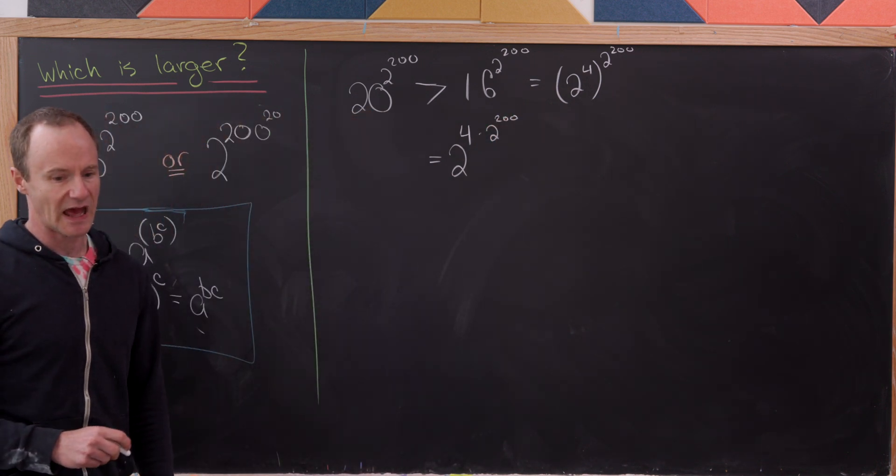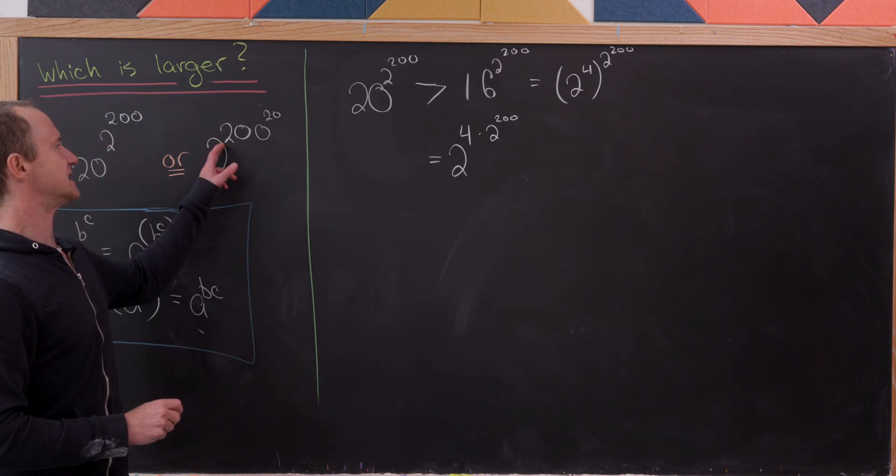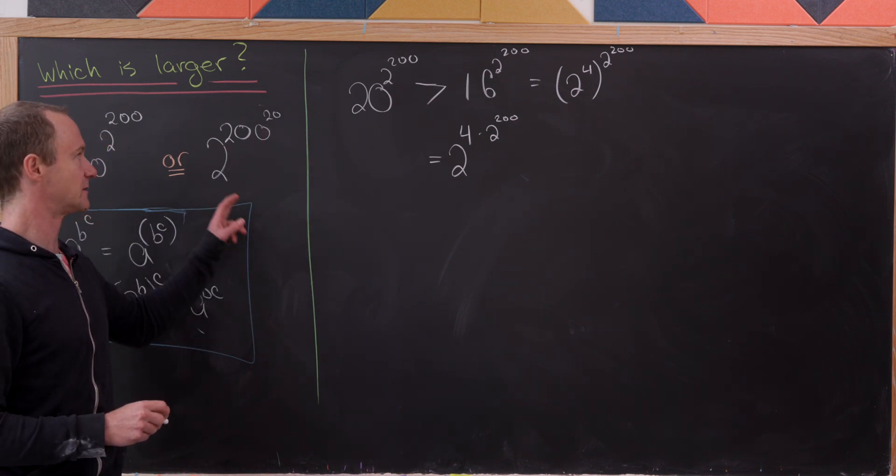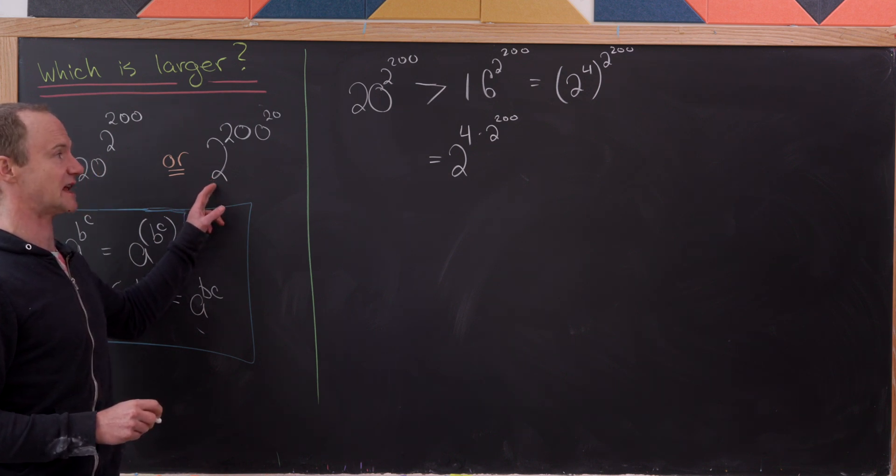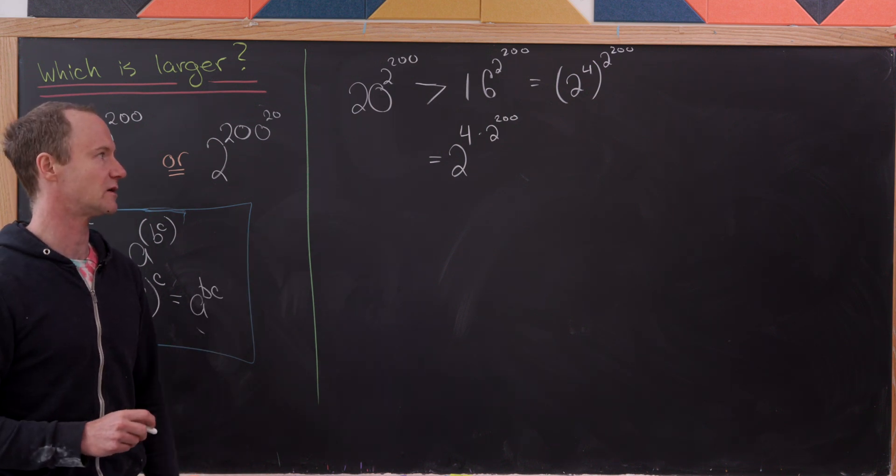Great. And now we'd like to make this look like something raised to the 20 power in our exponent. So we've gotten our base down to the right thing. Our base is now 2. Now we'd like to get the upper exponent equal to 20, if you will.